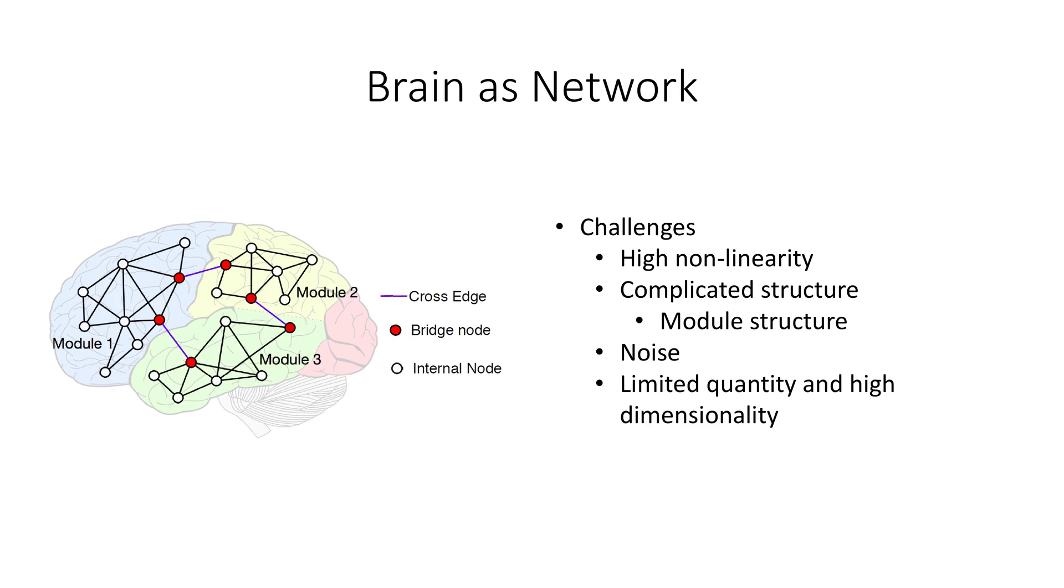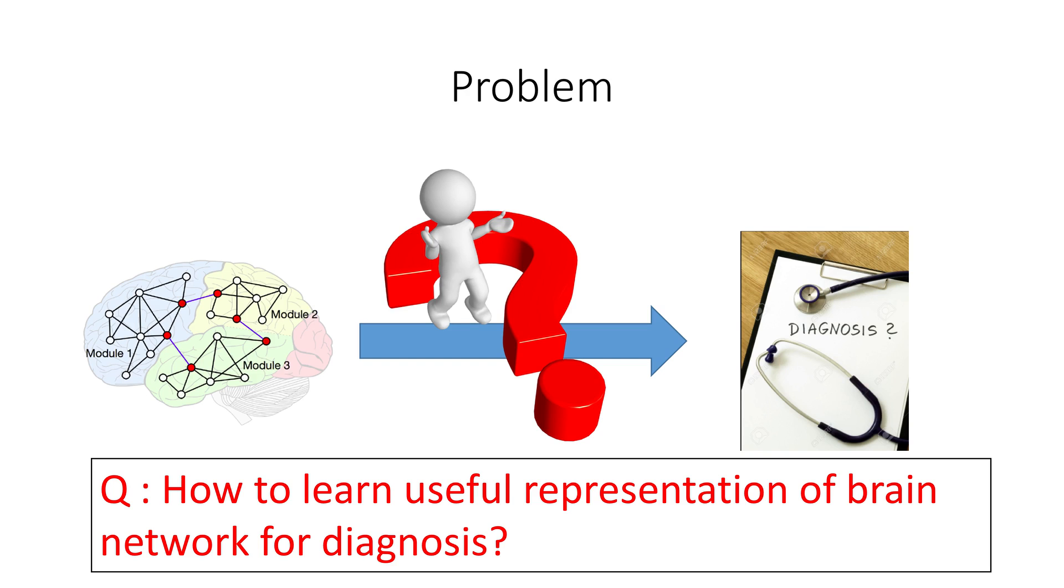Brain networks are complicated. There are a number of challenges to learn from them. Therefore, how to learn useful representations of brain networks and preserve the underlying structure is a critical problem.